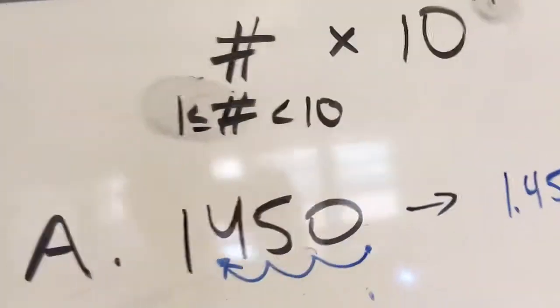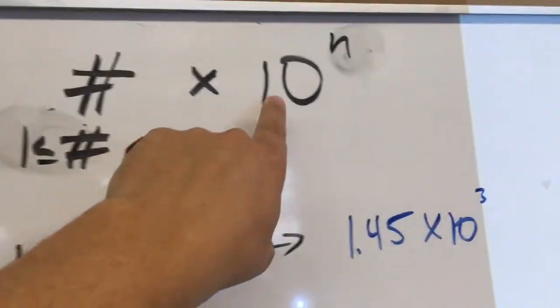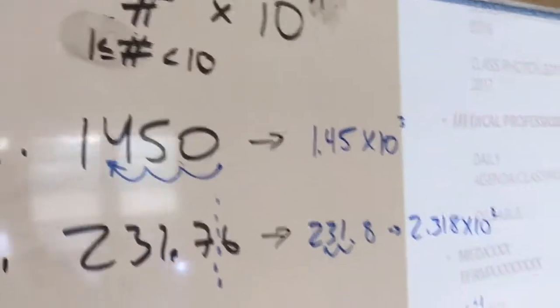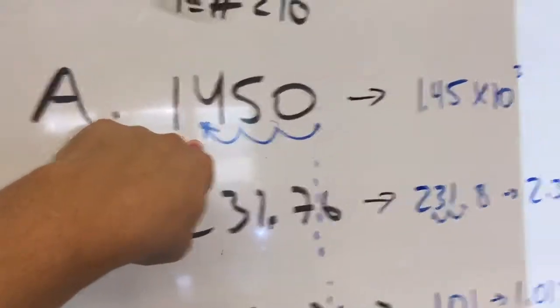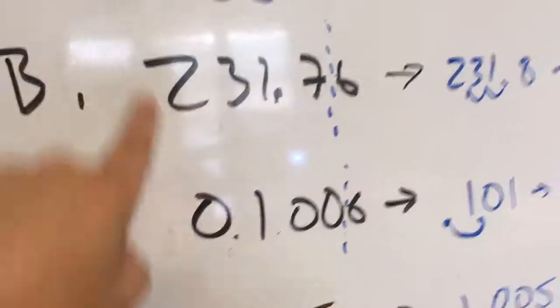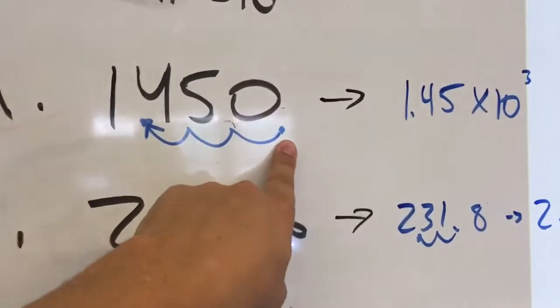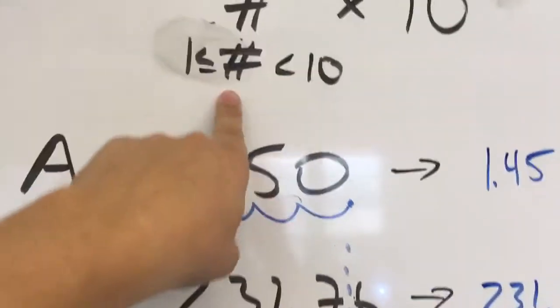That's the warm-up. For the scientific notation, scientific notation just as a review, the number here has to be greater than or equal to one and less than ten times ten to the exponent. And so for one thousand four hundred fifty, you'd have to first put it in three significant figures, so it already is. Then you take the decimal point and move it the number of spaces required to get it to be a number in between one and ten like that.